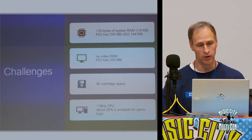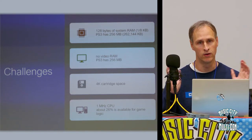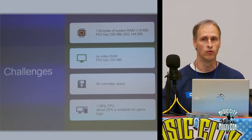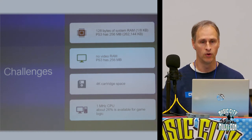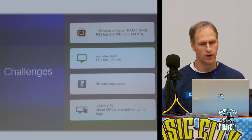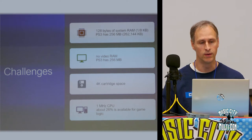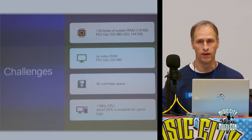There is no video RAM, which means you don't have a 320×200 buffer you can write to. Everything is done line by line, updated in real time — this is called 'racing the beam.' As the TV beam moves across the screen, you're updating registers in real time, and whatever is in those registers gets shown. You also have only a 1 MHz processor, with the graphics clock running three times faster.